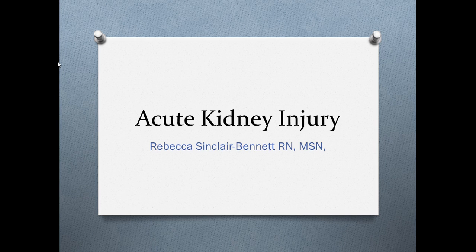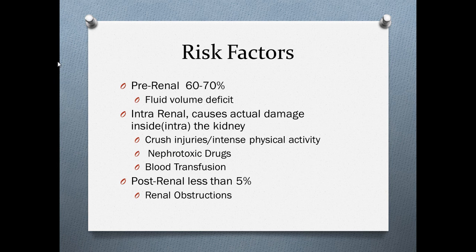The following presentation is for acute kidney injury or acute renal failure. There are three different categories for risk factors. We have pre-renal, which accounts for about 60 to 70 percent of all acute kidney injury or acute renal failure, and it is caused from fluid volume deficit — so periods of fluid volume deficit, polypharmacy, nausea, vomiting, excessive output, hemorrhaging, fever, and sepsis.